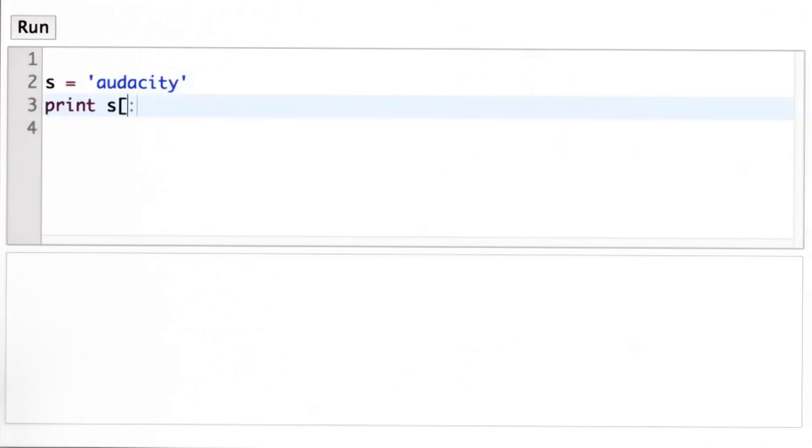We're going to print s[:-1], and this will give us all the characters except for the last one.